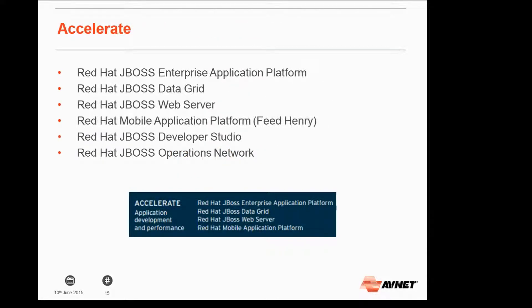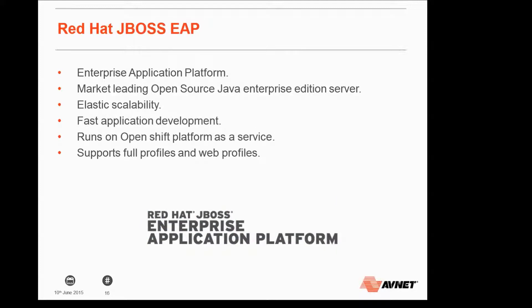The Accelerate piece contains the Red Hat JBoss Enterprise Application Platform, Data Grid, Web Server, Mobile Application Platform, Developer Studio, and JBoss Operations Network. EAP is the market leader in open source Java Enterprise Edition servers — this is the platform you run your applications on. It allows for fast application development, can run on Red Hat OpenShift as a platform as a service, supports full web profiles and full profiles, and has support for elastic scalability so it can scale dramatically as your business needs it to.